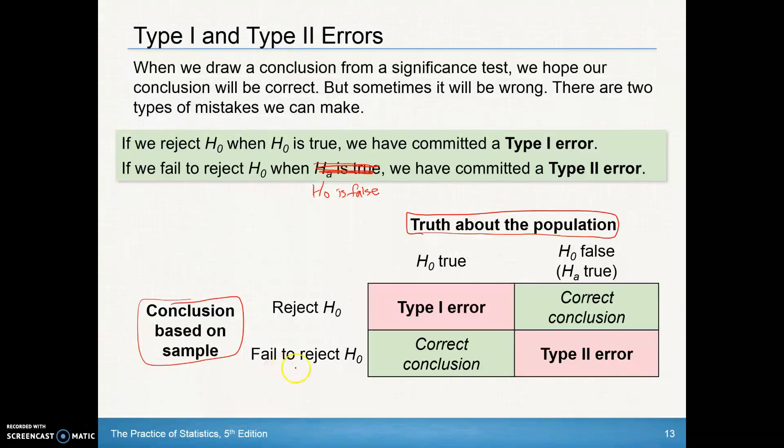If I fail to reject the null and the null is false, that's a type 2 error. Obviously, if I reject the null and the null really is false, hey, I've done my job. I've done a correct conclusion. And if I fail to reject the null and the null is true, again, I have a correct conclusion.